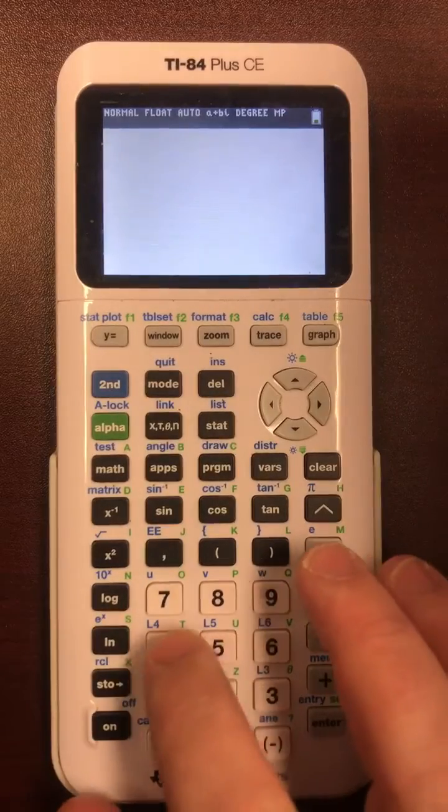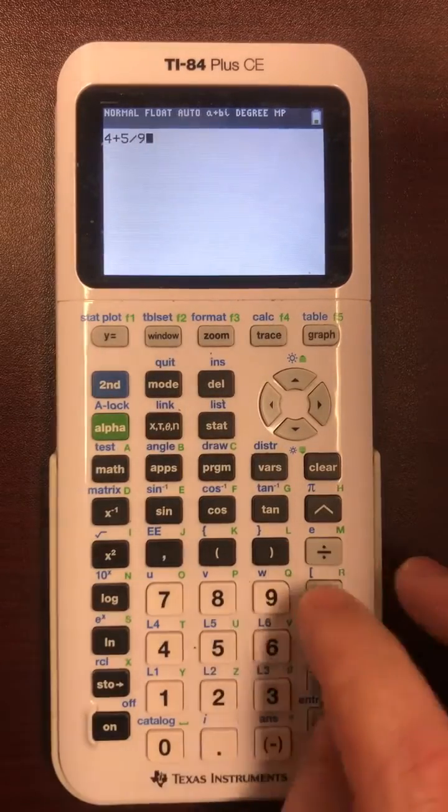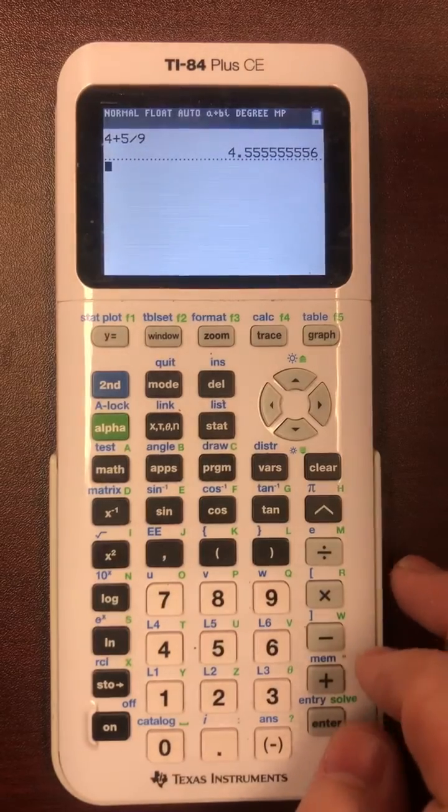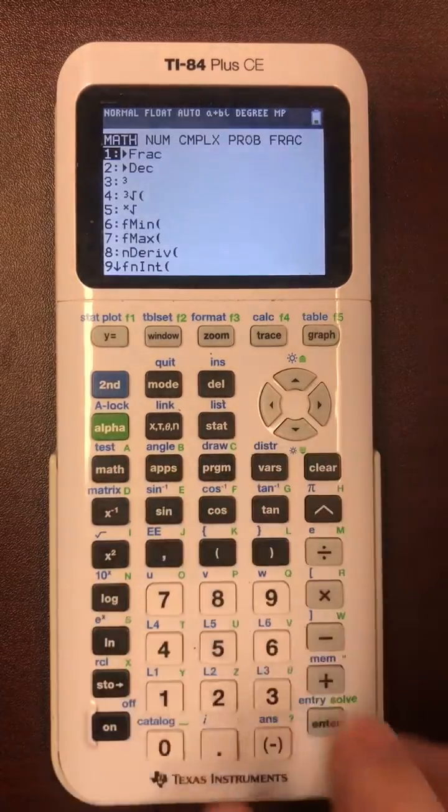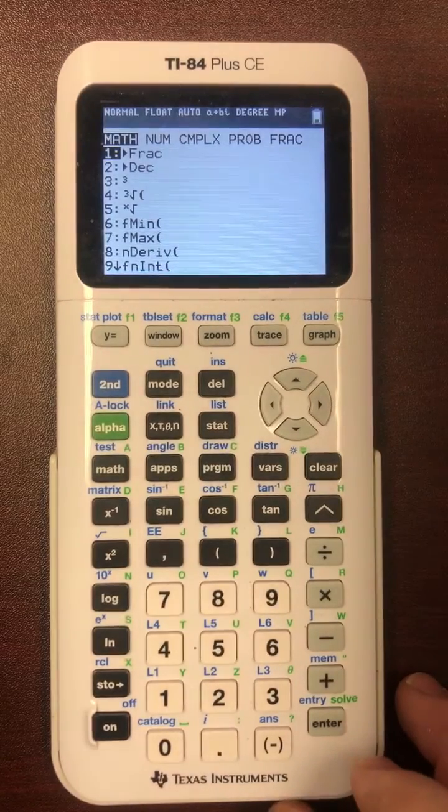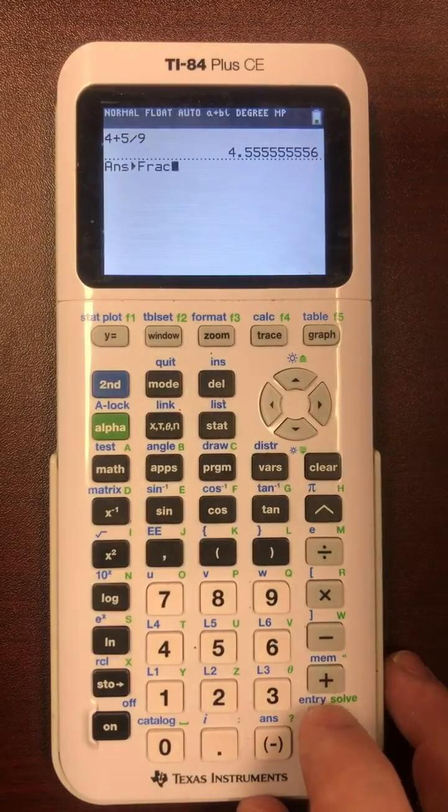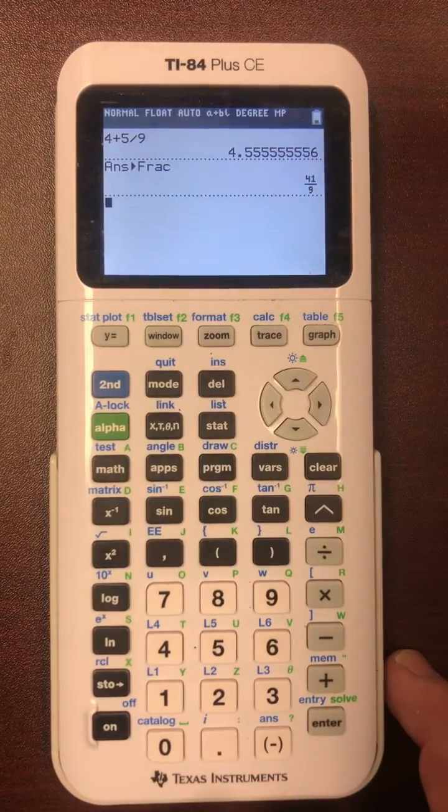For example, let's say we have 4 plus 5 ninths and we get this decimal. Now we know from before that math frac is the most important, most underutilized function on the calculator for most students. You hit math and the very first function there, boom, gives you 41 ninths.